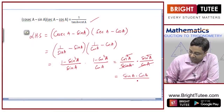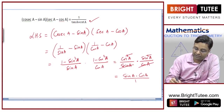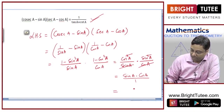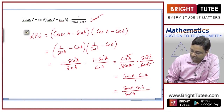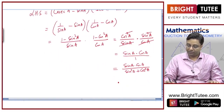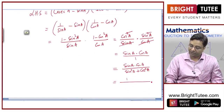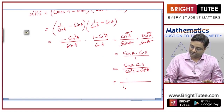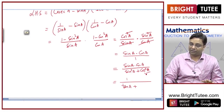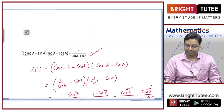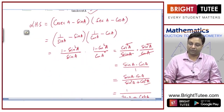Now write sinA·cosA as sinA·cosA/1 = sinA·cosA/(sin²A + cos²A). Dividing numerator and denominator by sinA·cosA: numerator becomes 1, denominator becomes sinA/cosA + cosA/sinA = tanA + cotA. So the expression equals 1/(tanA + cotA). Hence proved.